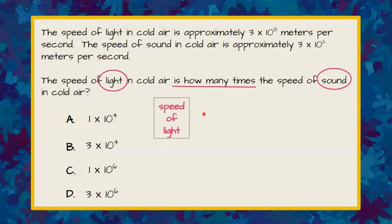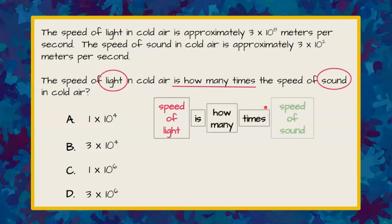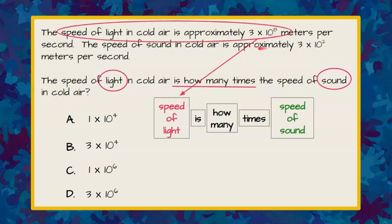So we're setting this up as: speed of light is how many times greater than the speed of sound? The speed of light is 3 times 10 to the 8th.